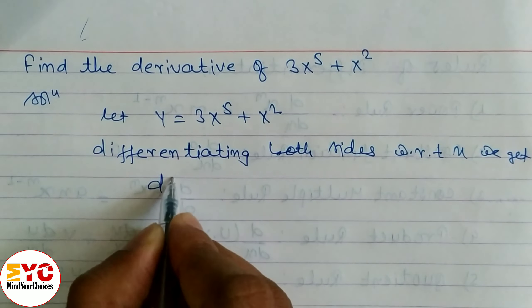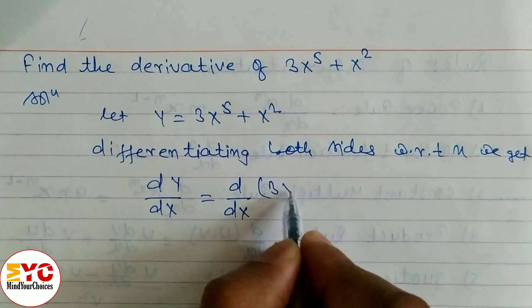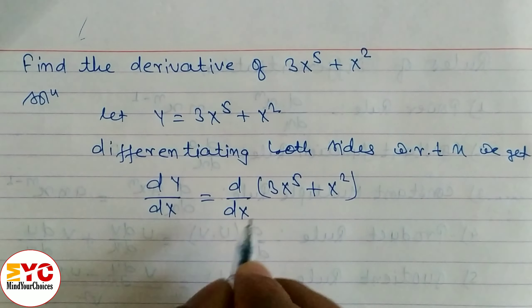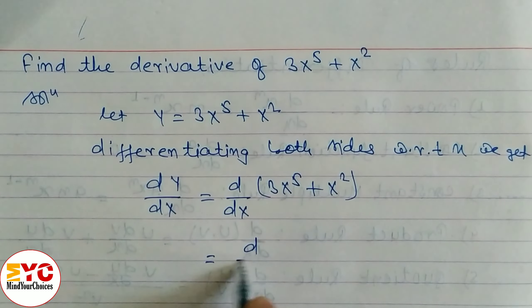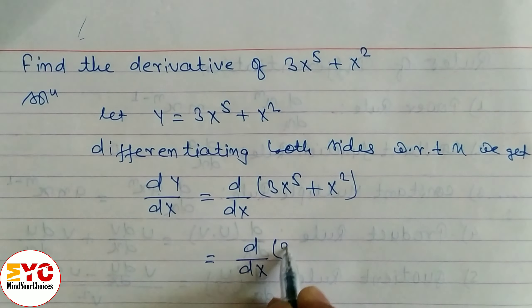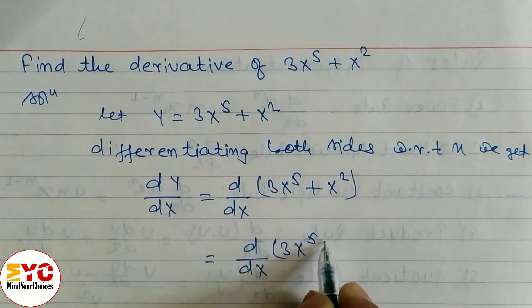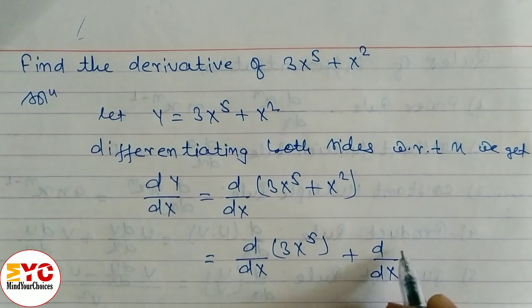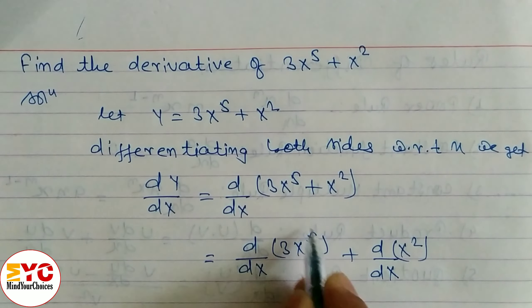equal to d by dx 3x power 5 plus x square. First of all we have to separate this so we can write d by dx 3x power 5 plus d by dx x square.